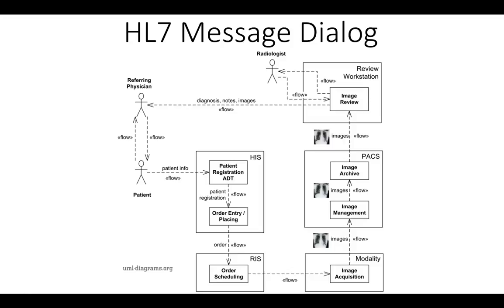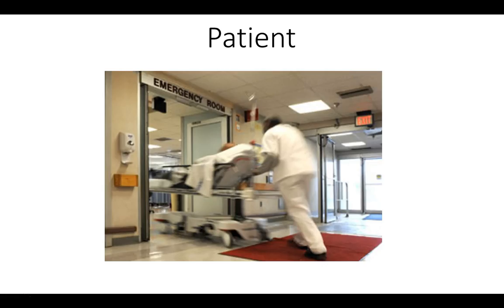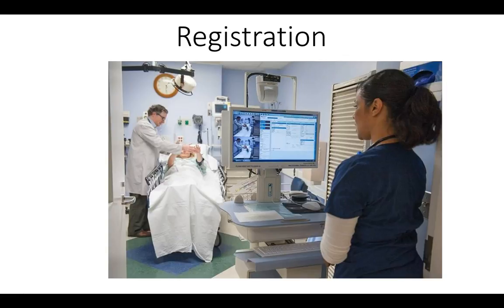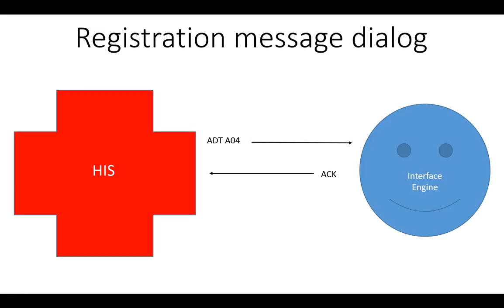Now that we have a good understanding of HL7, let's look at how the workflow matches the message flow. Our patient is a 45-year-old college professor with complaints of a massive headache, nausea, and vomiting. He is new to the area and has no previous admissions to the hospital. The ER registration clerk wheels in her cart and registers our patient in the hospital information system — the EMR, which stands for Electronic Medical Record. When she completes the form on her COW (Computer on Wheels) and clicks submit, what type of HL7 message is going to be generated?